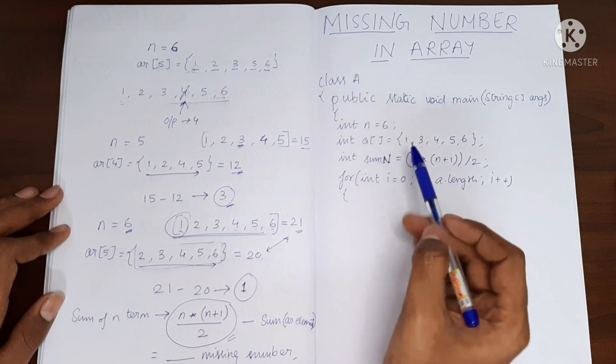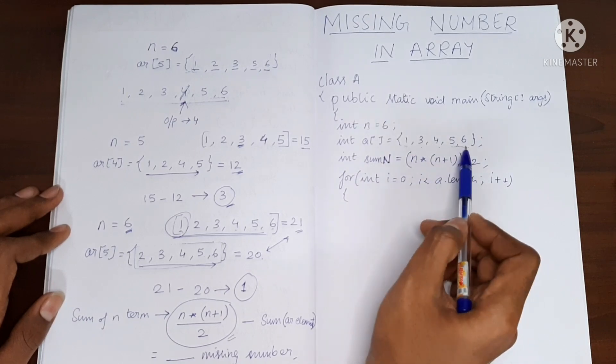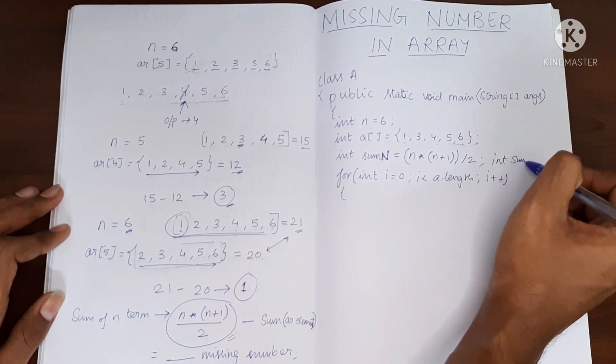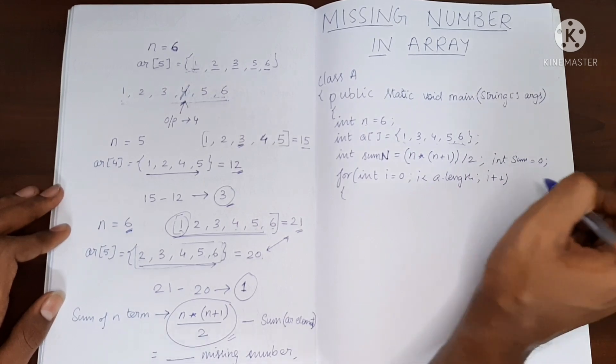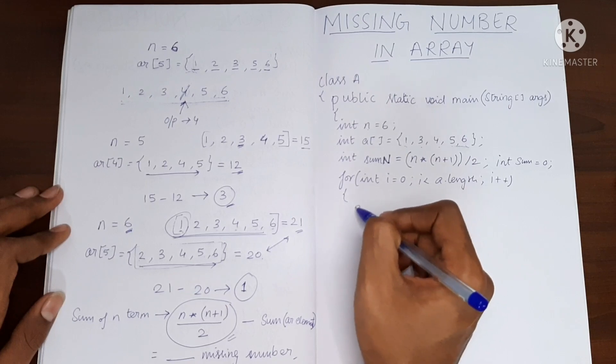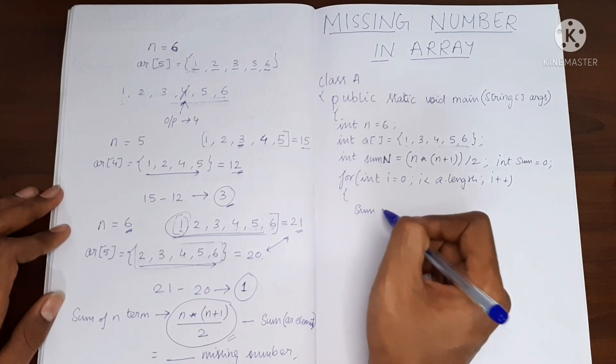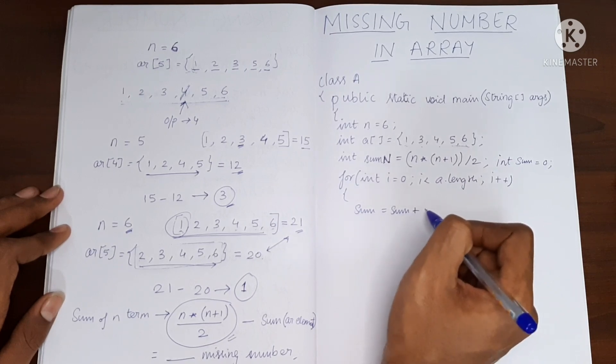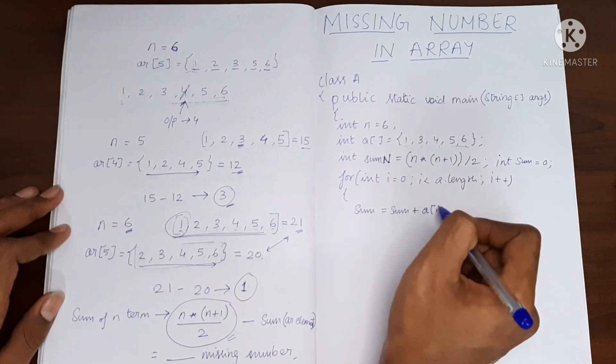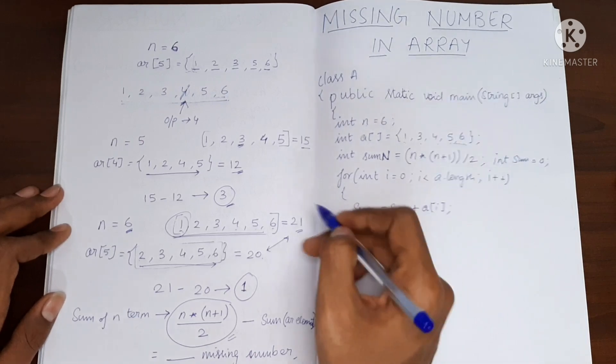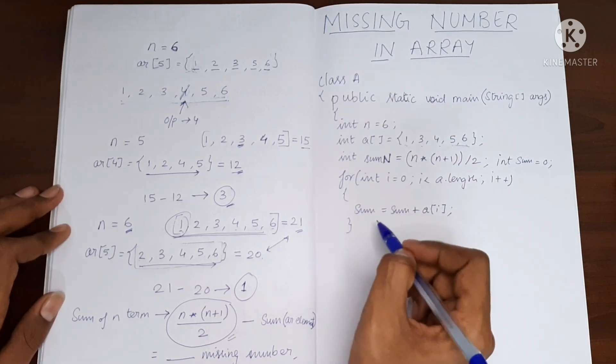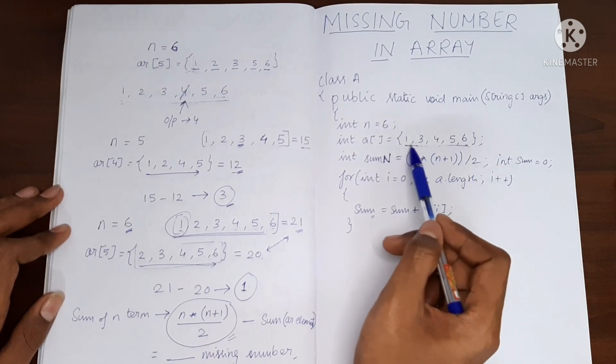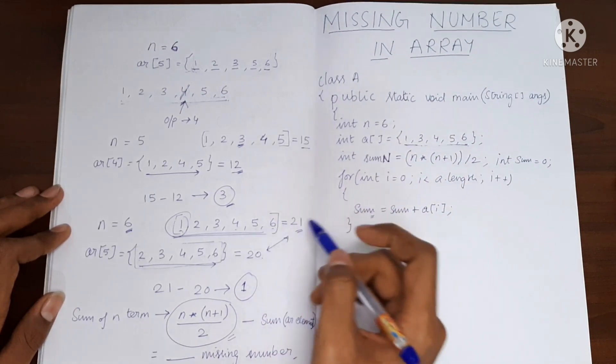So we need one more variable to store the sum of these elements. So I will create it over here. Let's call it int sum equal to 0. So now I will add sum equal to sum plus the value present at ith index. So once this for loop is done, I will have the variable sum which will be having the sum of all the elements in the array.